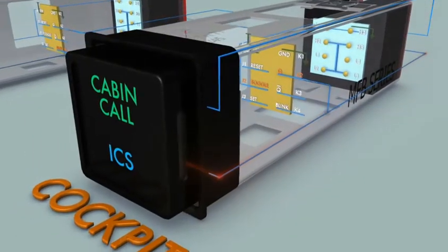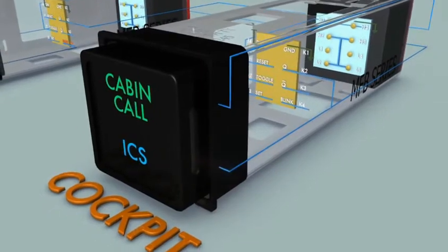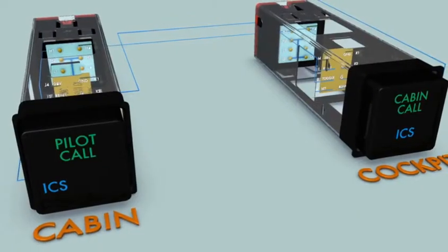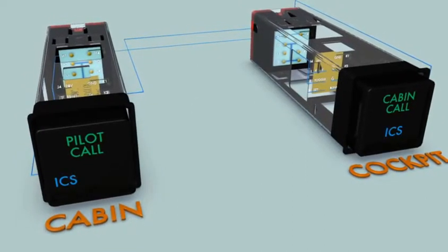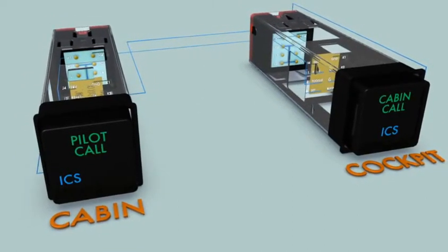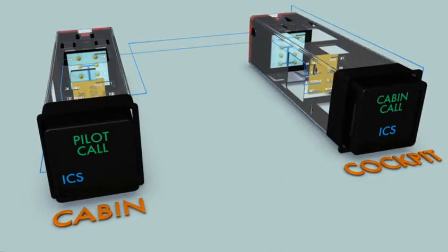Of the cabin call switch located in the cockpit, the illuminated ICS legends indicate the call between the cabin and the cockpit is active. This function again uses the cue output of the cabin call switch initiated by the toggle input.